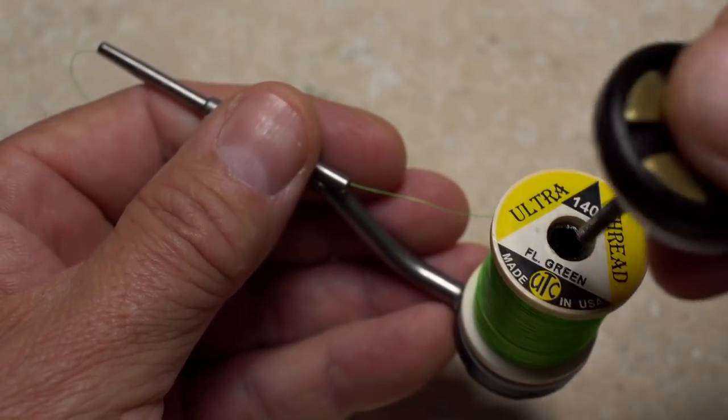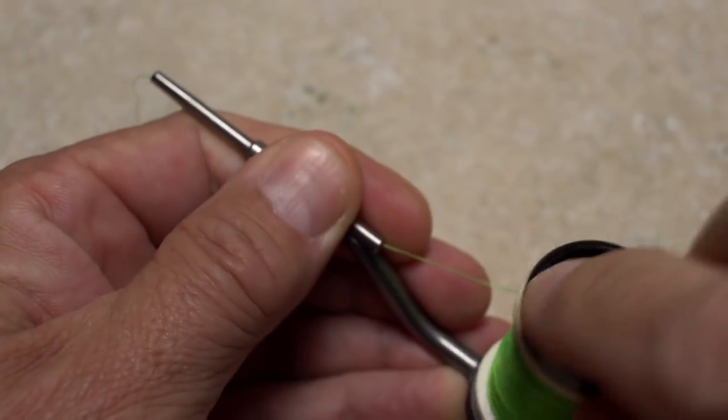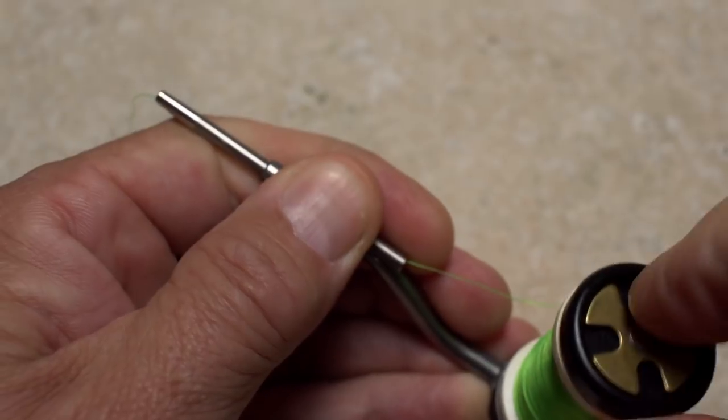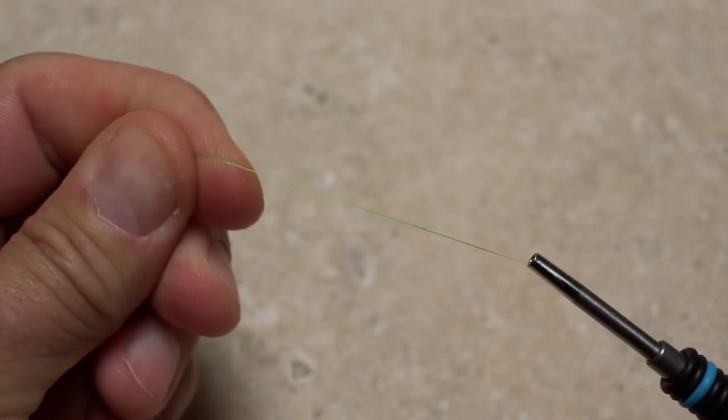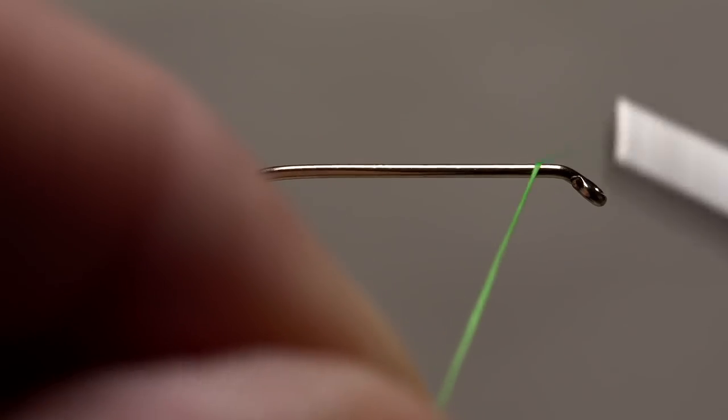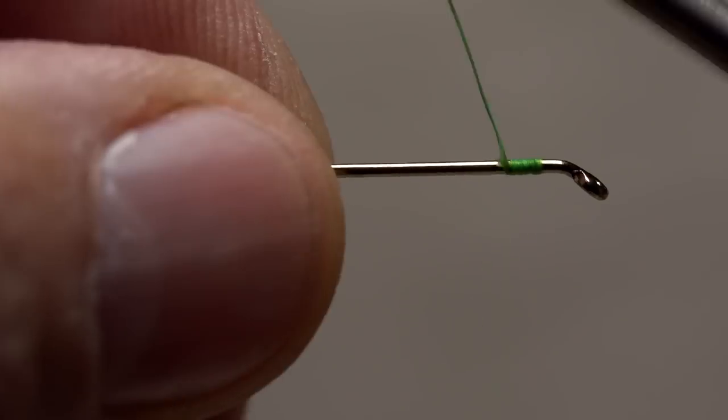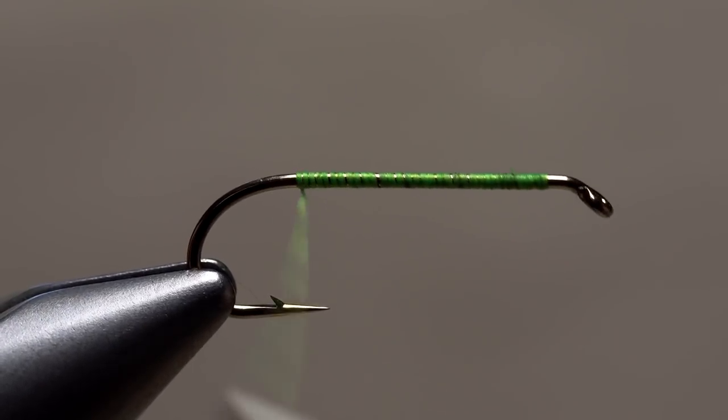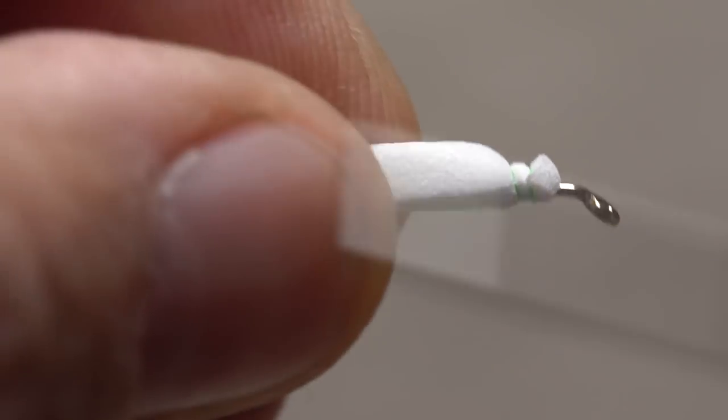I like to start with a heavier thread such as UTC 140 denier. It's both strong and doesn't seem to cut into the foam as much as some other threads. I'll add a fair bit of tension to my bobbin in order to make nice tight wraps. To help prevent slippage, it's always a good idea to start out with a substantial thread base on your hook.